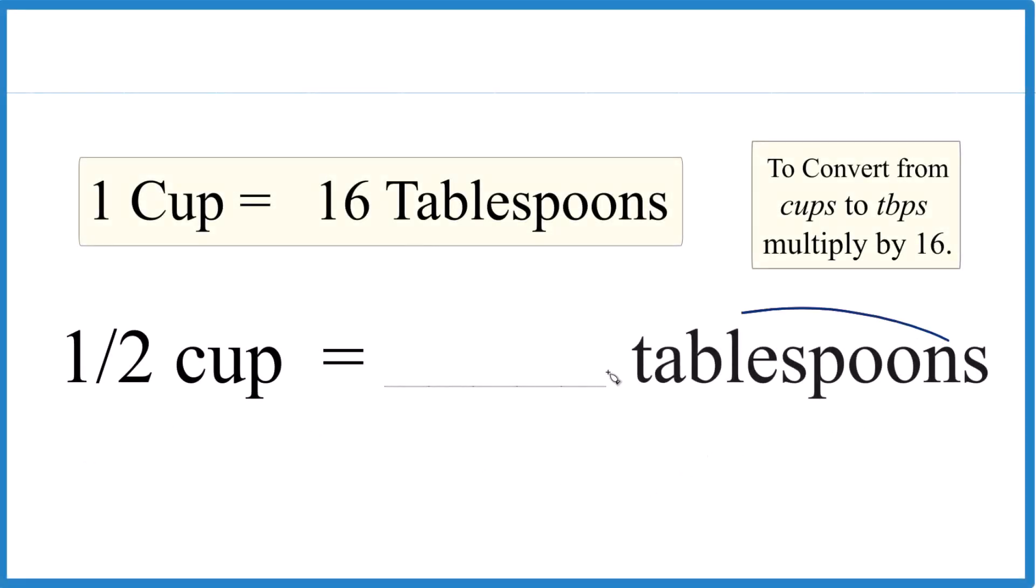So here's how you figure out how many tablespoons are in one half of a cup. What you need to know is that one cup equals 16 tablespoons.